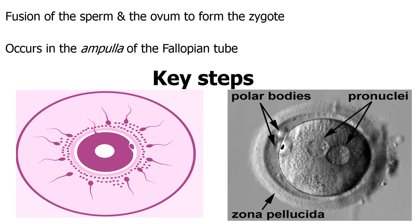When we talk about sperm capacitation, we're talking about the removal of the glycoprotein coat from the head of the spermatozoon. This effectively allows the spermatozoon to be able to find the ovum because the receptors are basically unveiled, basically revealed.